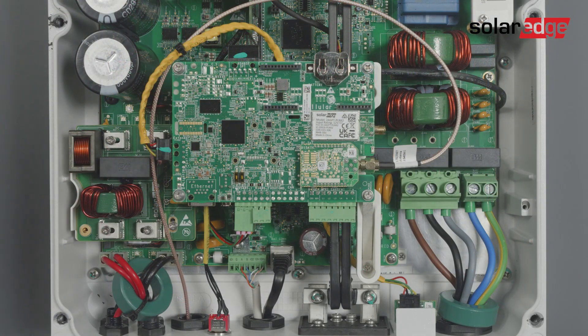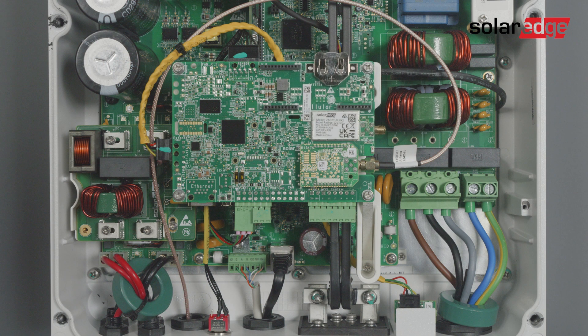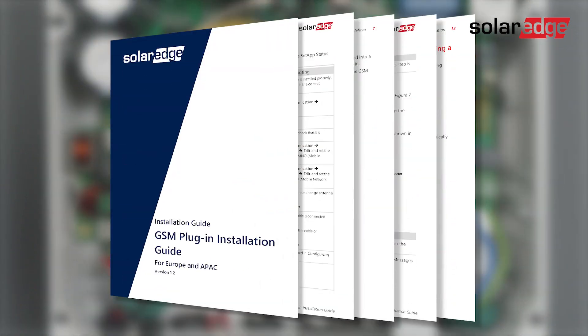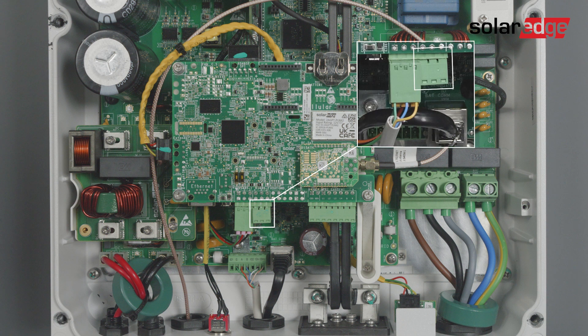In order to connect the inverter to the monitoring platform, use Ethernet to connect to the system owner router. For Wi-Fi or cellular installation, look in the SolarEdge application note for Wi-Fi and cellular application. If connecting more than one inverter through RS-485, use this terminal block to connect it.